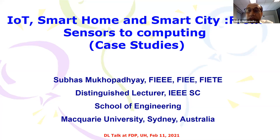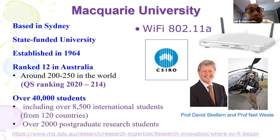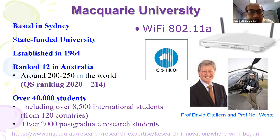I'll be sharing some of the research activities which we have started many years back and continuing, as one of our very best students Nagender has done work on smart home and you have already listened from him. My university is called Macquarie University — one of the five universities in Sydney. It's not a very old university; it was established in 1964. It's a government university, and in Australia most universities are government universities.